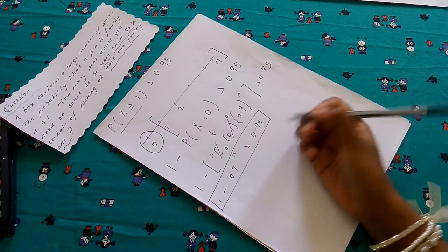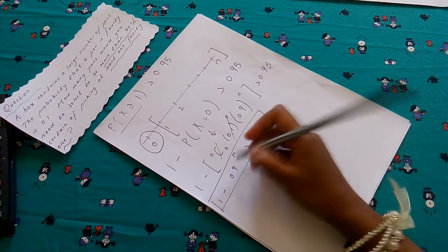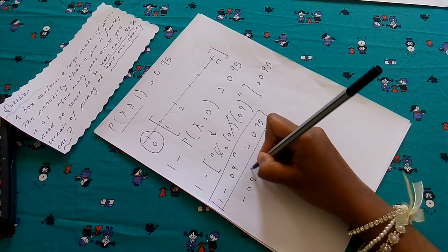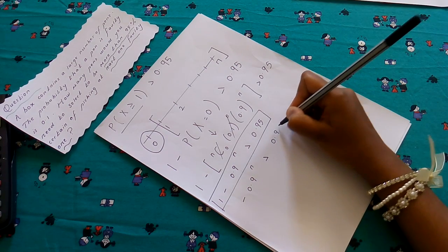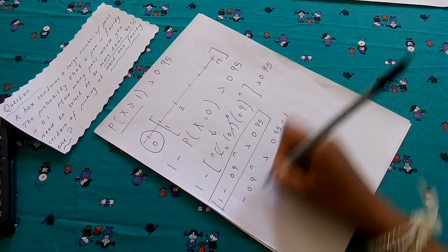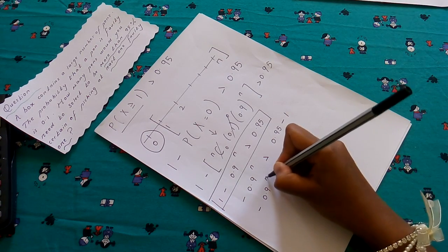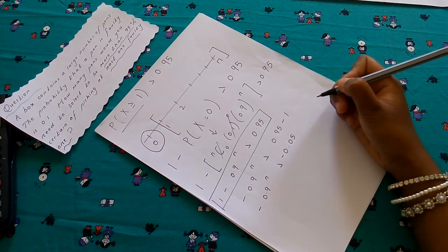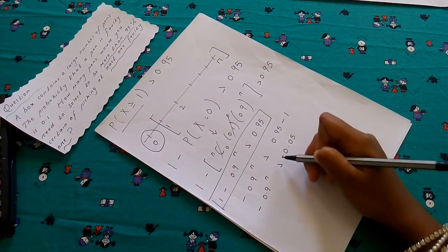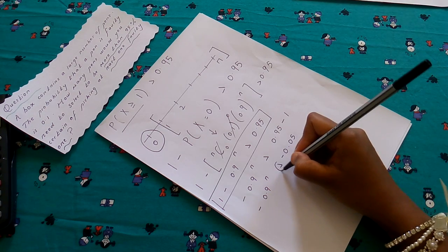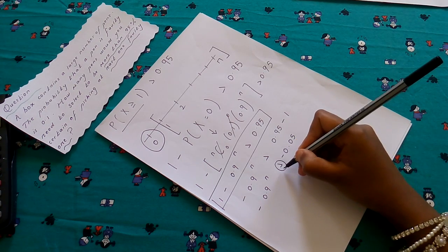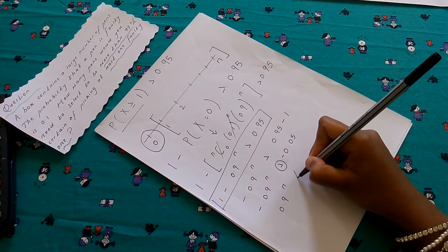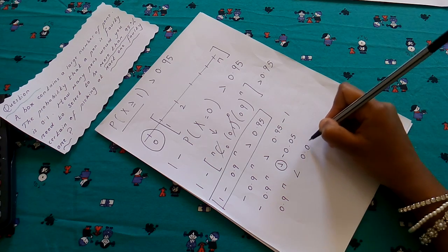Now we can simplify this further. If we group the like terms, we're going to have -0.9^n is greater than 0.95 minus 1, so we have -0.05. Now if I want to remove the negative sign, we need to change the sign. So the greater becomes less. So 0.9^n is less than 0.05.